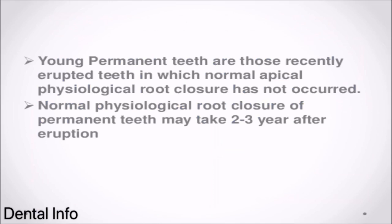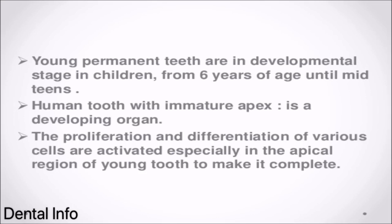Young permanent teeth are recently erupted teeth in which normal apical physiological root closure has not yet occurred. Normal physiological root closure of permanent teeth may take 2 to 3 years after eruption. Young permanent teeth are in a developmental stage in children from 6 years of age until mid-teens. A human tooth with an immature apex is a developing organ, where proliferation and differentiation of various cells are activated, especially in the apical region, to make it complete.